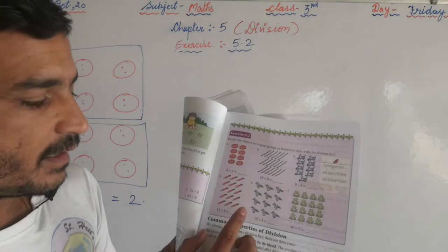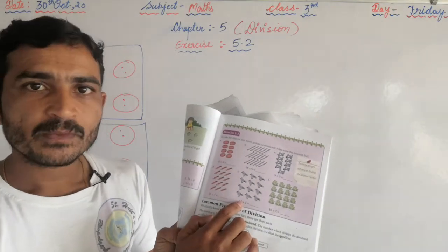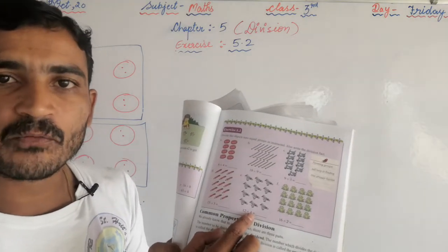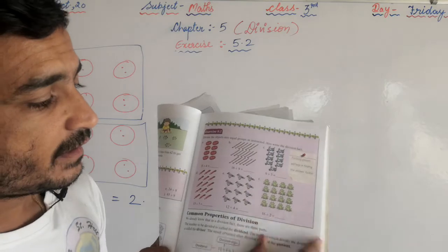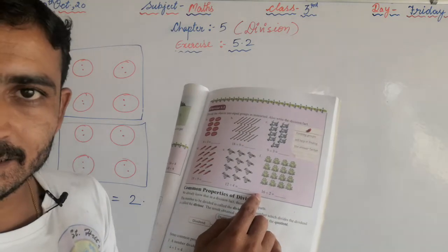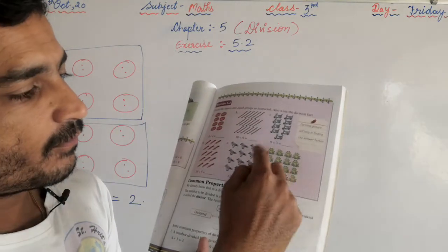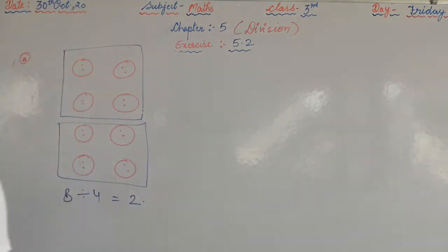Now count the number of birds: that is 12. You have to make groups of four. There are three groups of four birds, so the answer is three. Next, the frogs: number of frogs is 16. You have to make groups of two. The total number of groups is eight, so you write eight here.